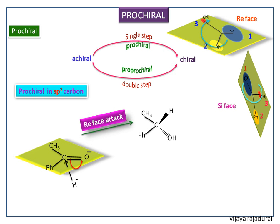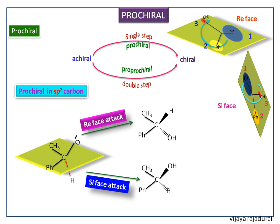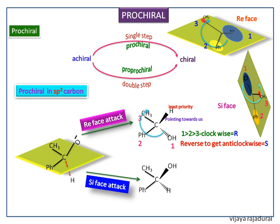Now we identify the configuration of the chiral products. In the first product, even though the priorities are arranged in decreasing order clockwise, the least priority group is pointing toward us, so we reverse to get counter-clockwise — that is S configuration. In the second product, the priorities are arranged in decreasing order clockwise and the least priority is pointing backwards, so it is R configuration.